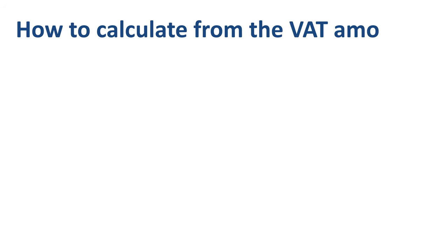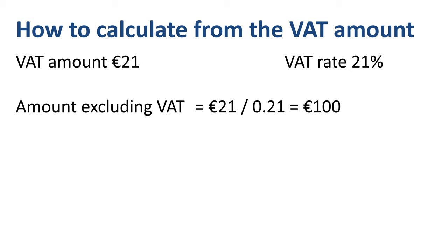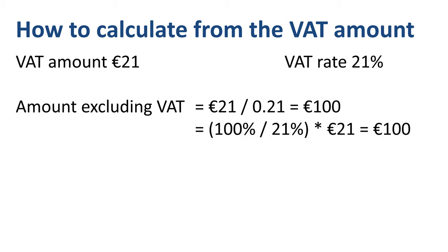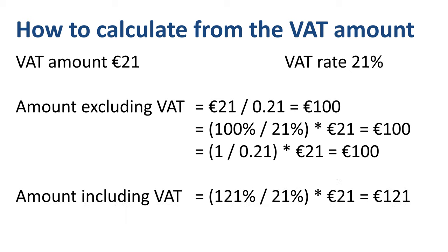Starting from the VAT amount and the VAT rate, you can also calculate the amount excluding VAT and the amount including VAT. To calculate the amount excluding VAT — the base number of 100% — take the 21 euros and divide by 0.21 to get 100 euros. Alternatively, calculate the ratio 100% over 21% and multiply by 21 euros, or simply 1 divided by 0.21 times 21 euros — same outcome, 100 euros. To calculate the amount including VAT, use the ratio 121% over 21%, or 1.21 over 0.21, multiplied by 21 euros — the outcome is 121 euros.